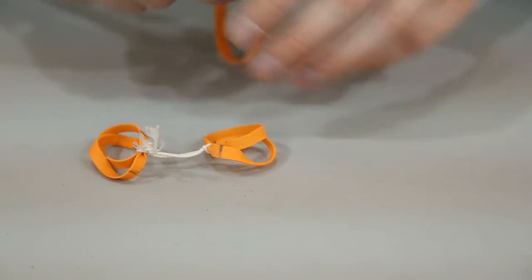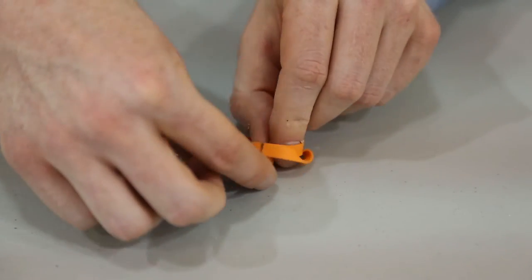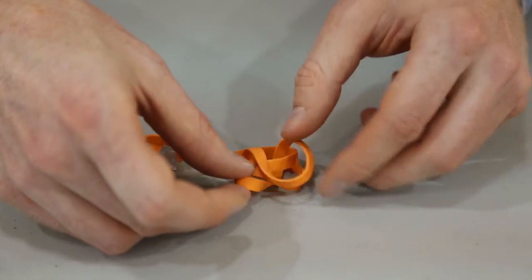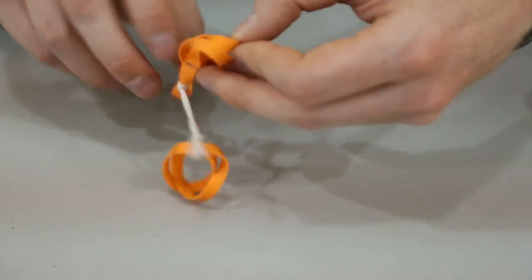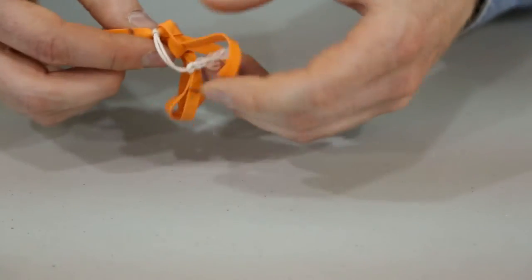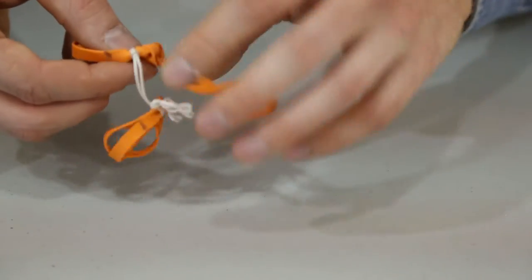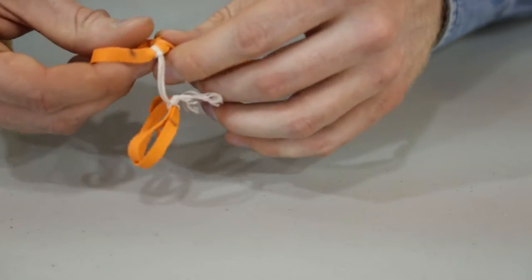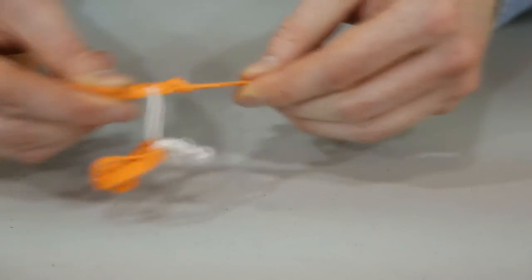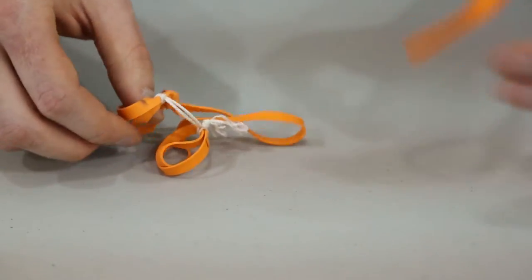Now I'll tie on four rubber bands looping them through themselves at each of the markings. If you don't pull the rubber band all the way tight, it's easy to untie it and try again if you don't get it in exactly the right place.